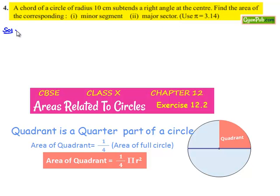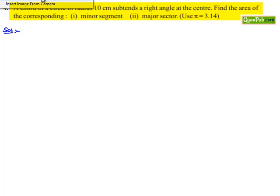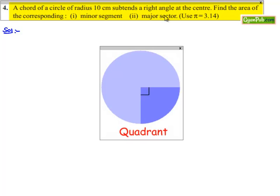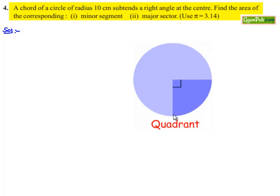Now moving on to the solution, let us consider the following figure. Here consider an arc AB that subtends an angle 90 degrees at the center, and the radius of the circle is given as 10 cm.